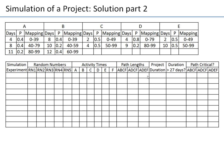For each experiment, I generate random activity times for A, B, C, D, and E, compute the length of each path, and determine project duration as the maximum path length. I also check whether the project exceeds 27 days — our threshold, possibly what we promised the customer — and record which path is critical using a 0/1 indicator.